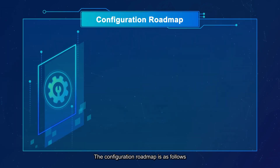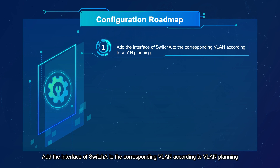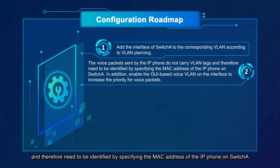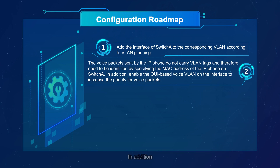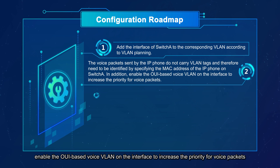The configuration roadmap is as follows. Add the interface of switch A to the corresponding VLAN according to VLAN planning. The voice packets sent by the IP phone do not carry VLAN tags and therefore need to be identified by specifying the MAC address of the IP phone on switch A. In addition, enable the OUI-based voice VLAN on the interface to increase the priority of voice packets.